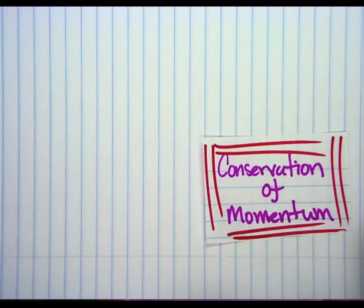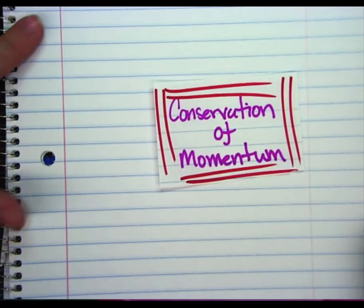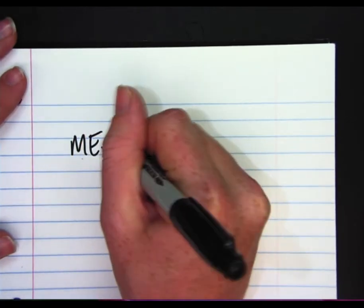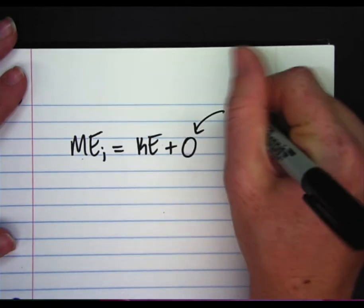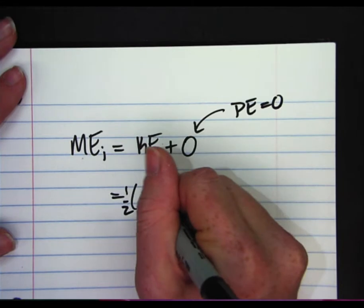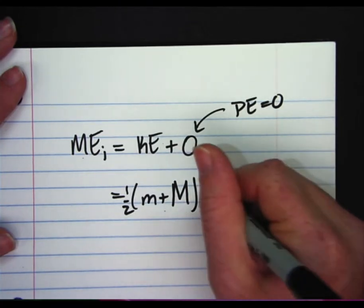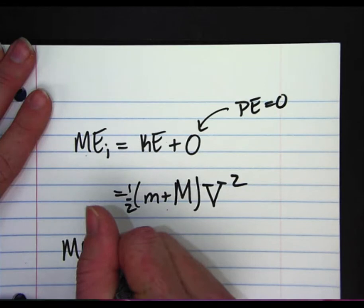Now let's take it one step further and look at the mechanical energy aspects. Setting momentum aside, we bring in mechanical energy. We define the initial position as when the ball has just been caught by the pendulum arm and is moving upward. So mechanical energy initial equals kinetic energy plus zero — potential energy is defined to be zero at that point. Our initial mechanical energy is one-half times (little m plus big M) times big V squared, where big V is the velocity of the pendulum arm with the ball.